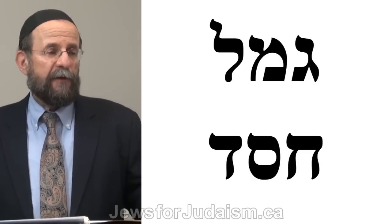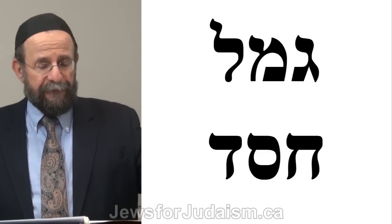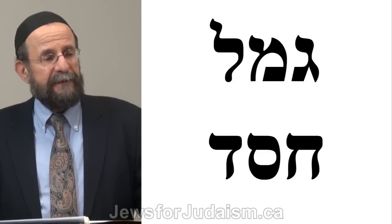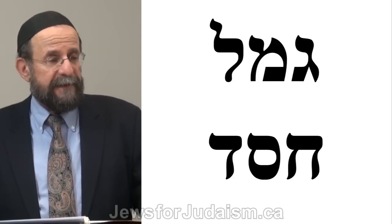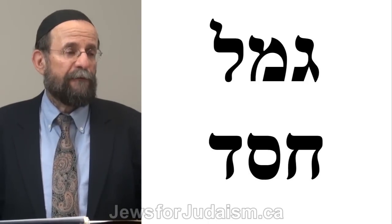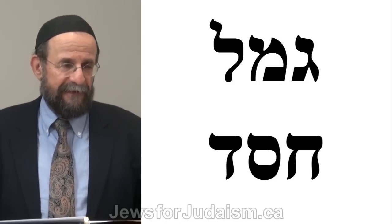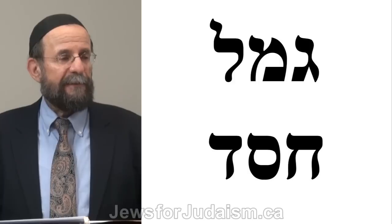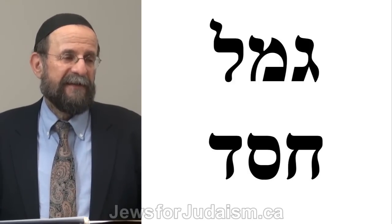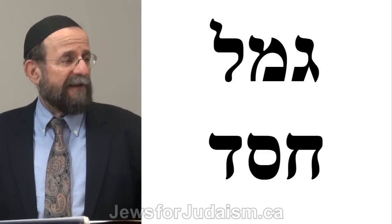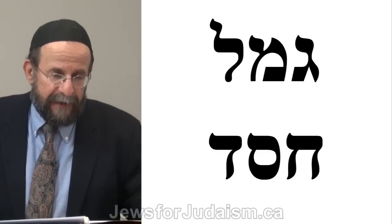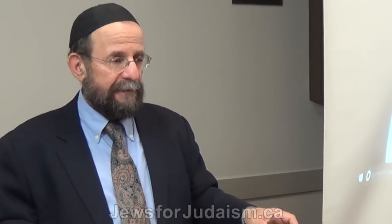The top of the slide is the word Gimel — the letter Gimel, which means to give. Then we have the word Chesed, the word for kindness. Numerically these words are basically the same. Gimel is Gimel(3), Mem(40), Lamed(30) — a total of 73. Chesed is Chet(8), Samech(60), Dalet(4) — a total of 72. We learned that in Gematria you can add one for the value of the word itself — that's called the Kolel. So 72 and 73 become 73 and 73 — the same number.